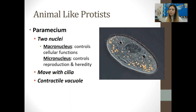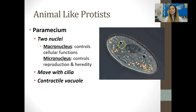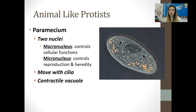Paramecium are another type of animal-like protist, unique because they have two nuclei — a big macronucleus and a small micronucleus. The macronucleus controls all the functions happening in the cell, while the micronucleus controls reproduction. They move with cilia — tiny little hairs surrounding the cell. You'll notice that all protists have contractile vacuole structures, those star-like structures that help them remove excess water from the cell. They're typically found in wet environments, so it makes sense they wouldn't want to get too full of water.